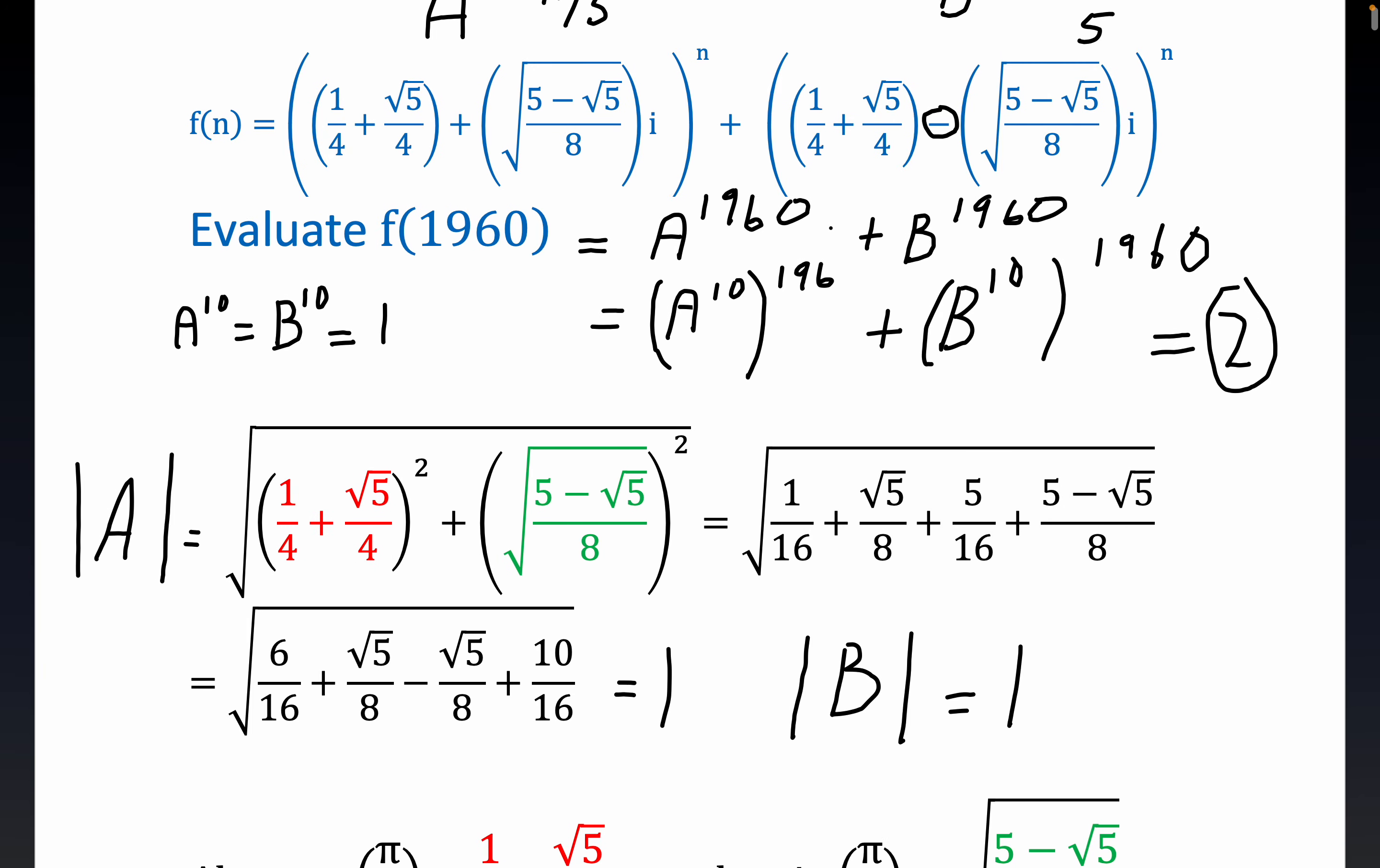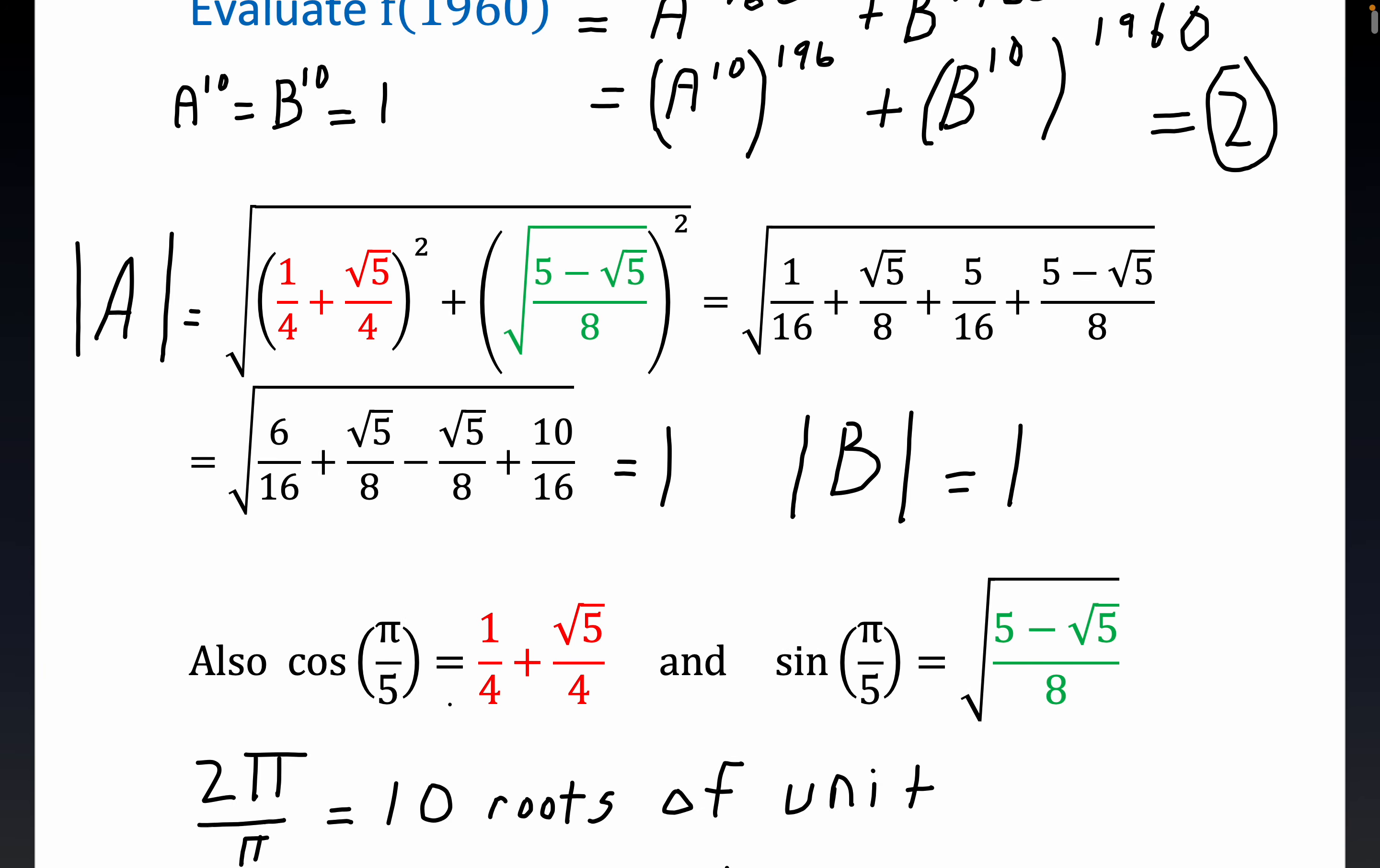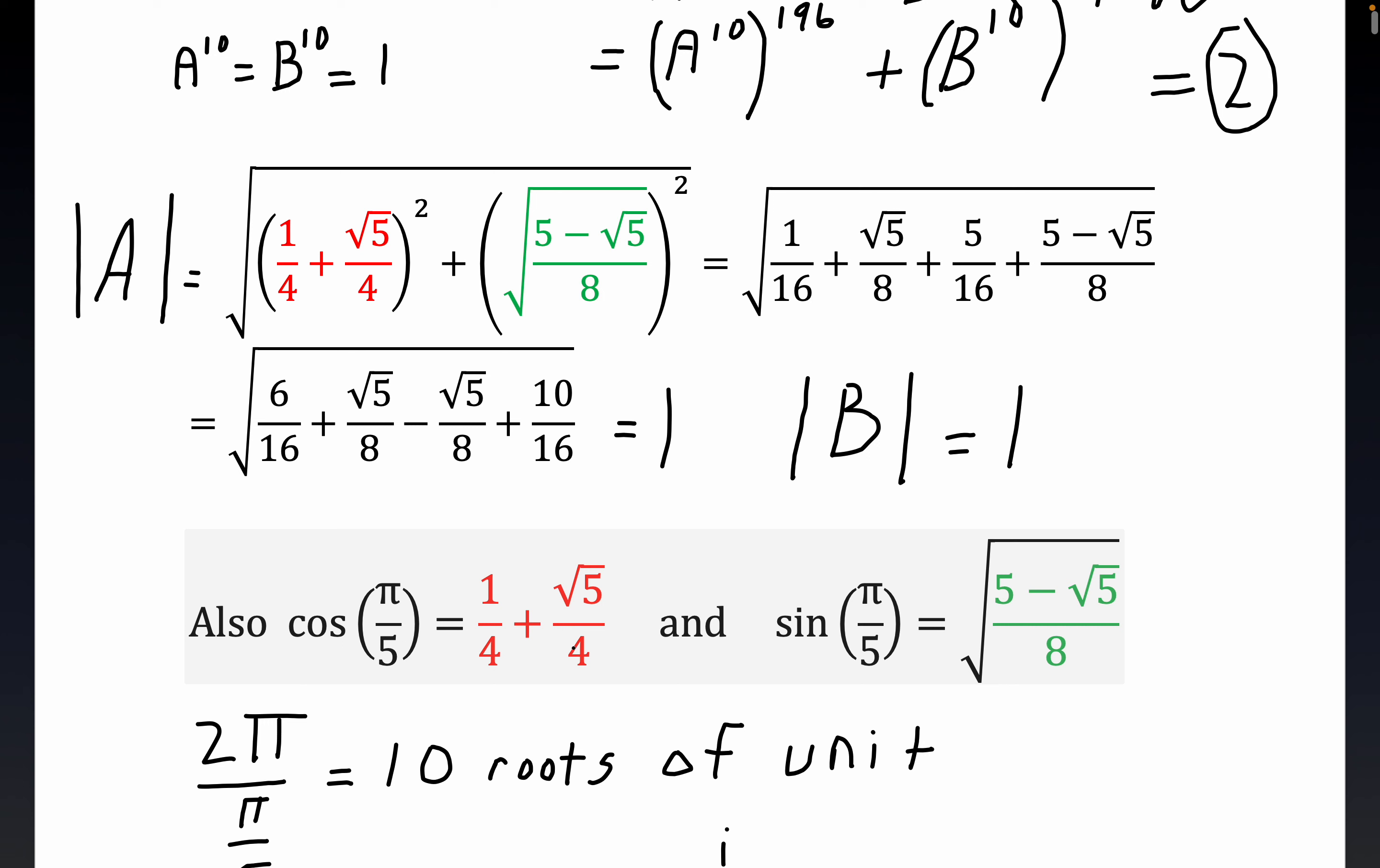And the skyhook really here is knowing that cosine of pi over 5 is this. The real common, you know, square root of 3 over 2 and 1 half, those are three roots of unity. And these are a little bit more uncommon, but this is something you can prove geometrically. It's not one of the so-called nice angles, but it's close to being nice.